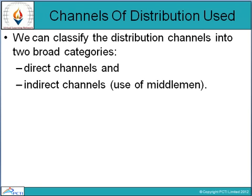Indirect channels involve the use of middlemen. When it is not possible for the manufacturer to directly supply to consumers, they use middlemen such as wholesalers, retailers, and mercantile agents. For example, from producer to retailer to consumer, or from producer to agent to wholesaler to retailer to consumer.